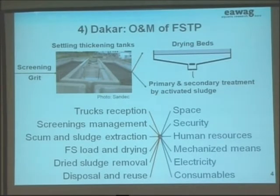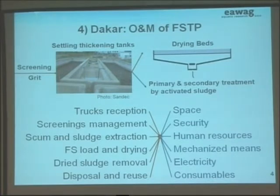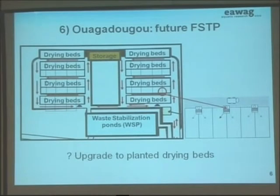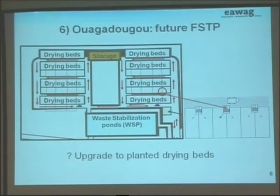These are simple technologies, but in Wagadougou, after difficulties encountered with operating the settling thickening tanks — which work with mechanised wings — the decision was made to operate the future treatment plant without those tanks. So trucks will be directly conducted to the drying bed. There will be 96 drying beds, which creates a new challenge: instead of extracting sludge from settling tanks, we now have to manage truck movement inside the treatment plant.